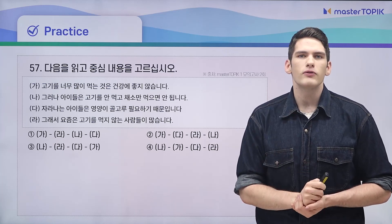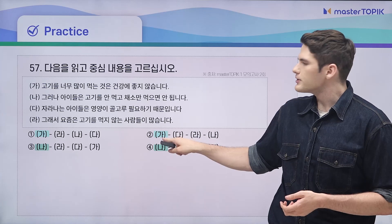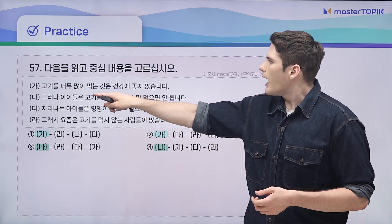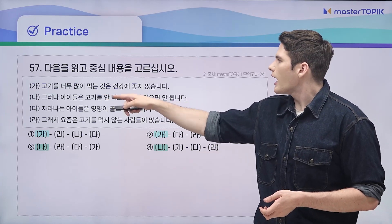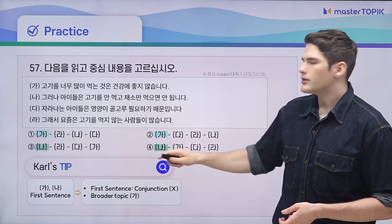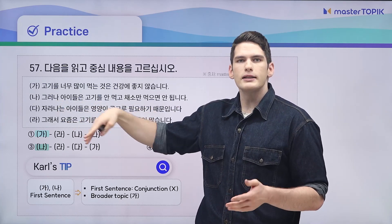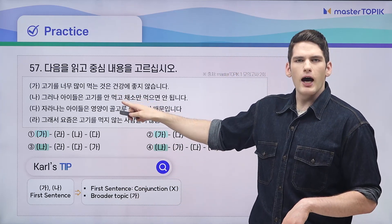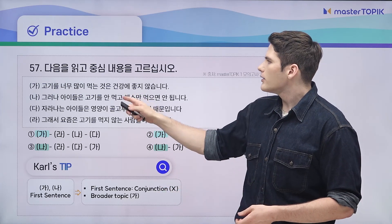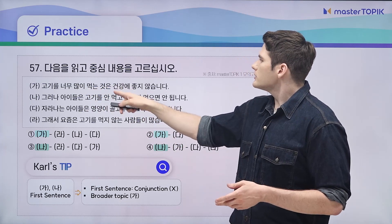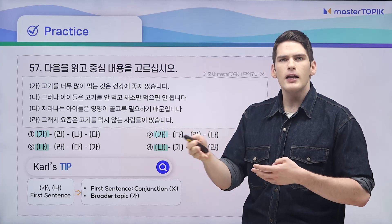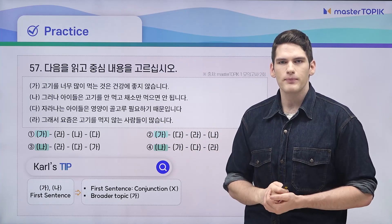What did I say we're going to look for first? We look for the first options — here it's going to be 가 or 나. So right away we know we don't need to look at 다 or 라 yet. 가: 고기를 너무 많이 먹는 것은 건강에 좋지 않습니다. 나: 그러나 아이들은 고기를 안 먹고 채소만 먹으면 안 됩니다. We found a conjunction — 그러나, which means but. You can't start an idea with but, so 나 is not going to be the first sentence. We know it's going to be 가, and it also presents a broad topic about health.